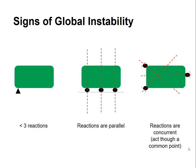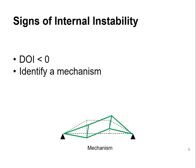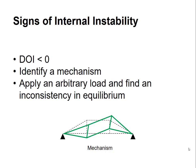Now let's look at how you would know if you have instability in the internal configuration. If you calculate DOI to be less than zero, that's easy. You're done. You know that the structure is unstable. But if you haven't, you still need to look at other sources of instability. And there are two main ways that you can go about looking for this. One is to identify a mechanism. If you can physically think of how this structure might move unrestrained, you can show it to be unstable. The other way is you can apply any load, an arbitrary load to your structure, and try to find an inconsistency in equilibrium. We'll see this by example shortly.